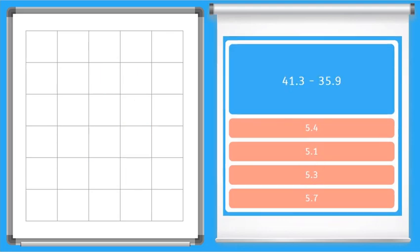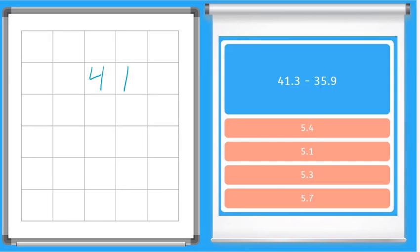Okay our next one here is 41 and three tenths minus 35 and nine tenths. Now just like regular subtraction, three is smaller than nine so we cannot take nine away from three. We're going to have to borrow from the ones place. So I'm going to mark this out. That becomes a zero so this becomes 13. So 13 minus nine is what? Four.